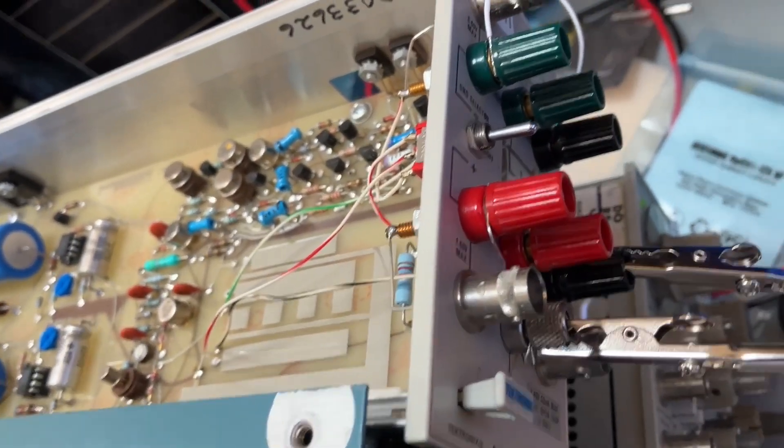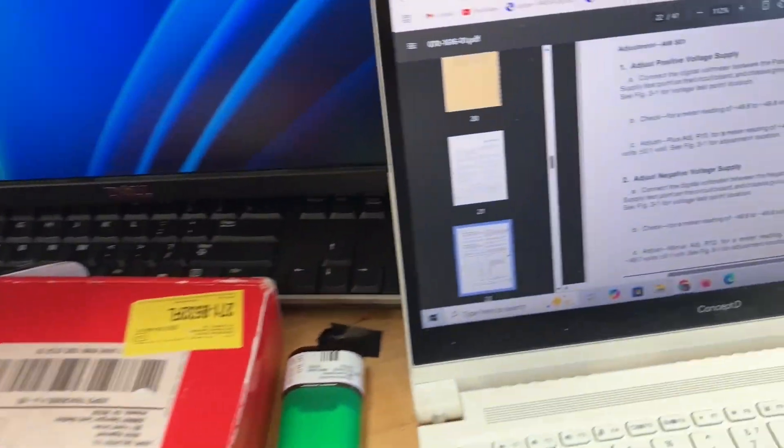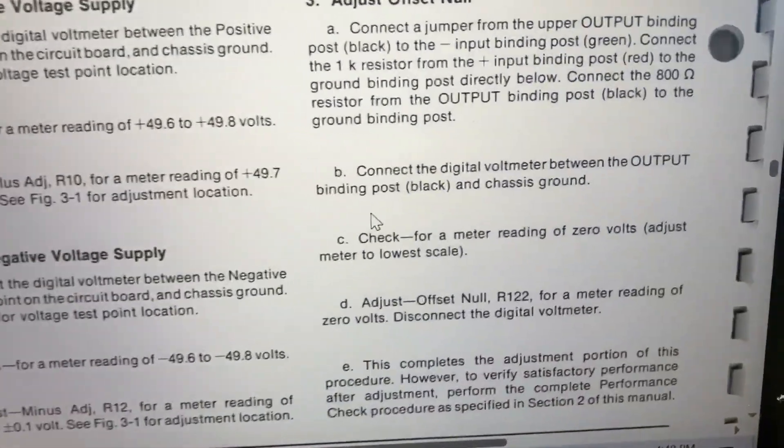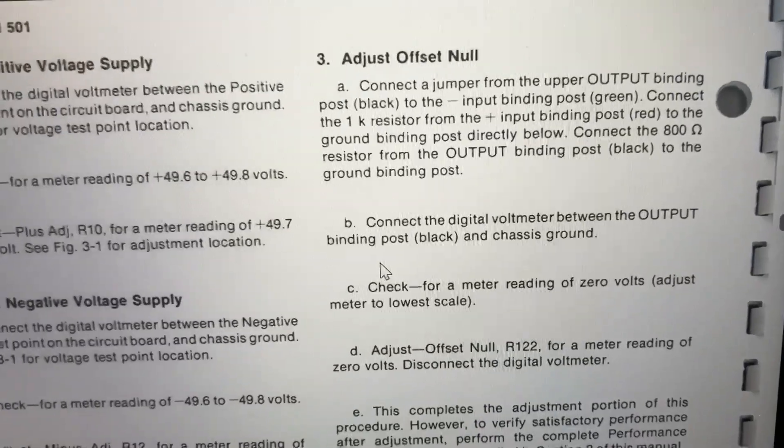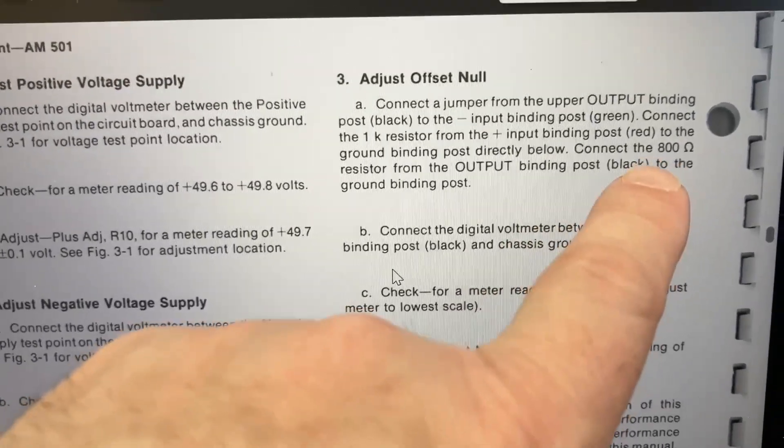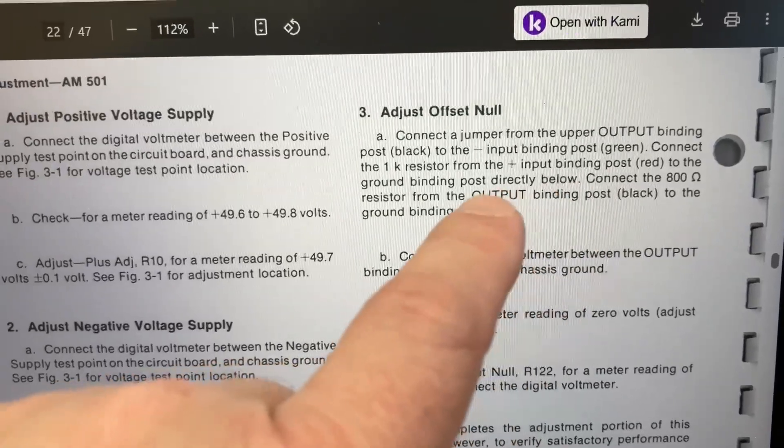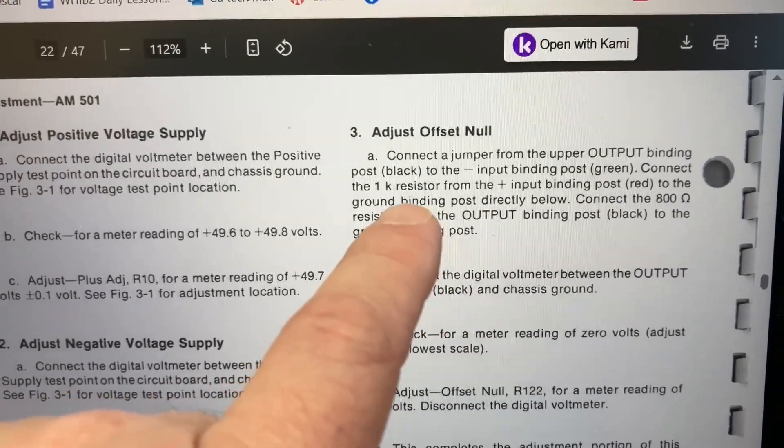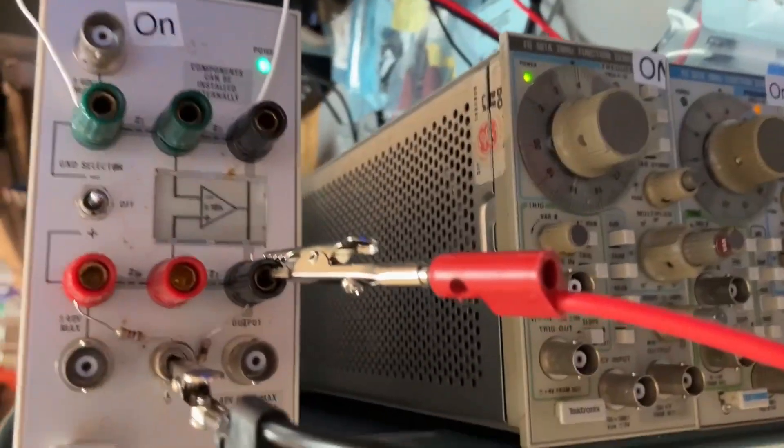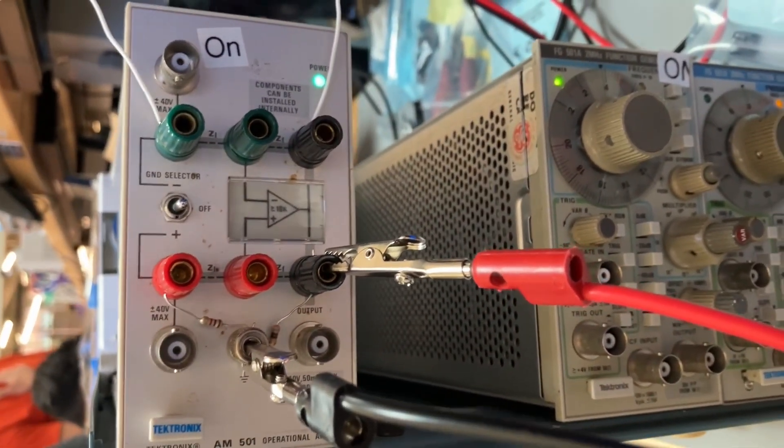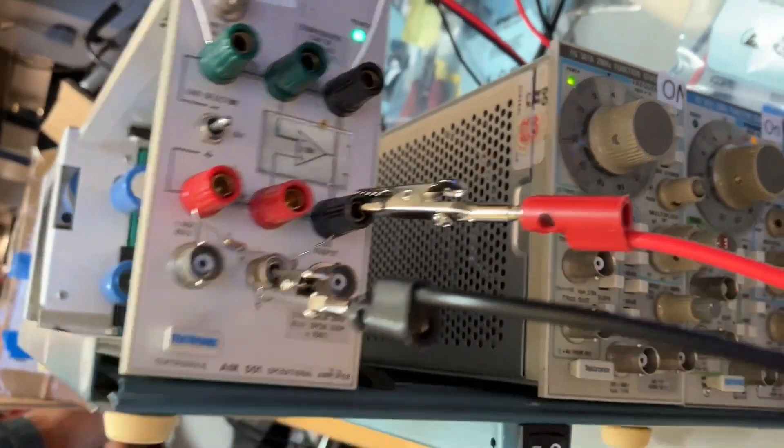Anyway, we're setting up the offset null procedure here. We don't have an 800 ohm resistor handy, so I used 820, but I figured that should be close enough. There's this 1k resistor and then a jumper, so those are all placed in the appropriate spots.